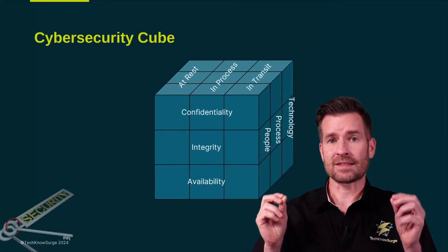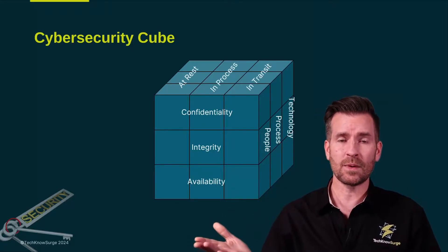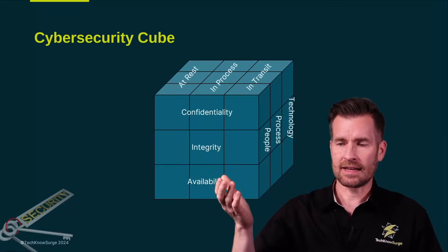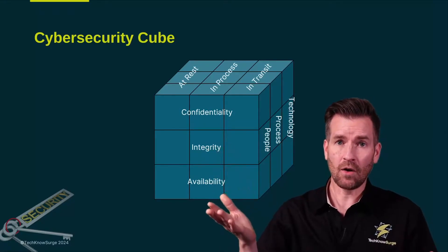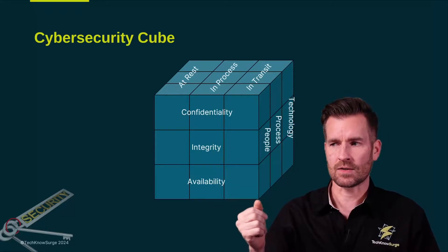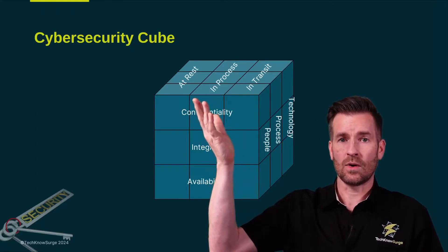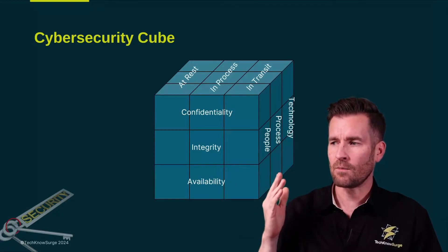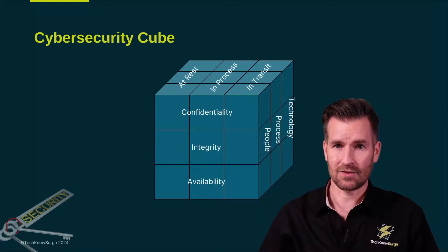In this video, we're going to talk about the cybersecurity cube. This is what it looks like. We're going to just briefly mention confidentiality, integrity, and availability because we already have discussed that in prior videos. We're going to really get into at-rest, in-process, and in-transit, and then we'll talk about people, processes, and technology.